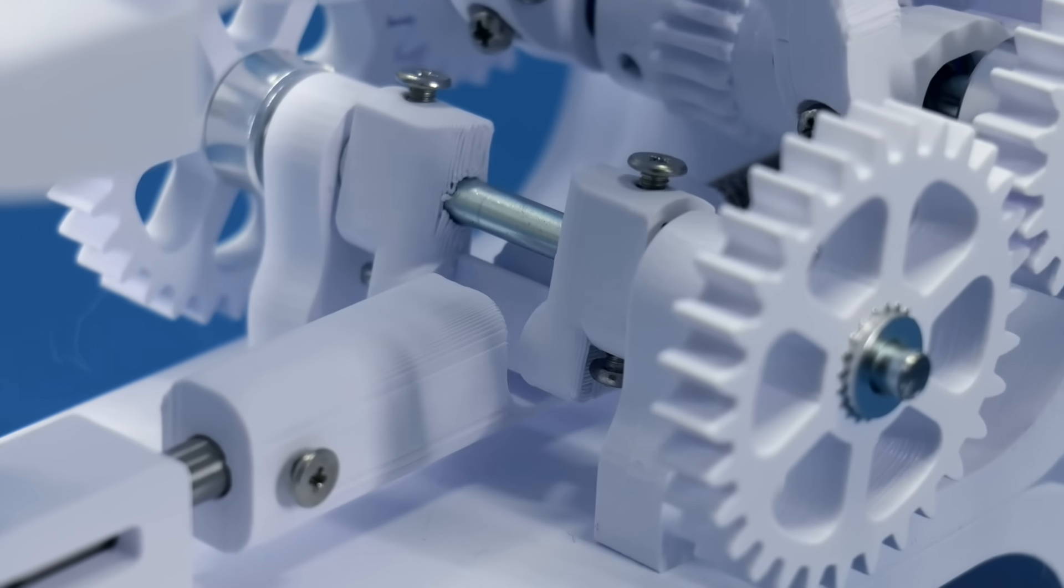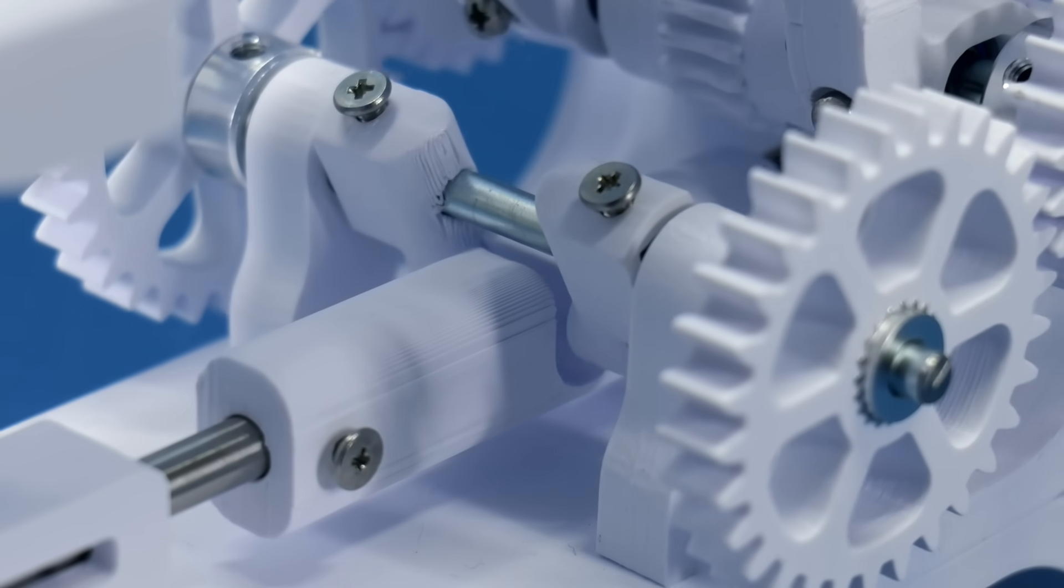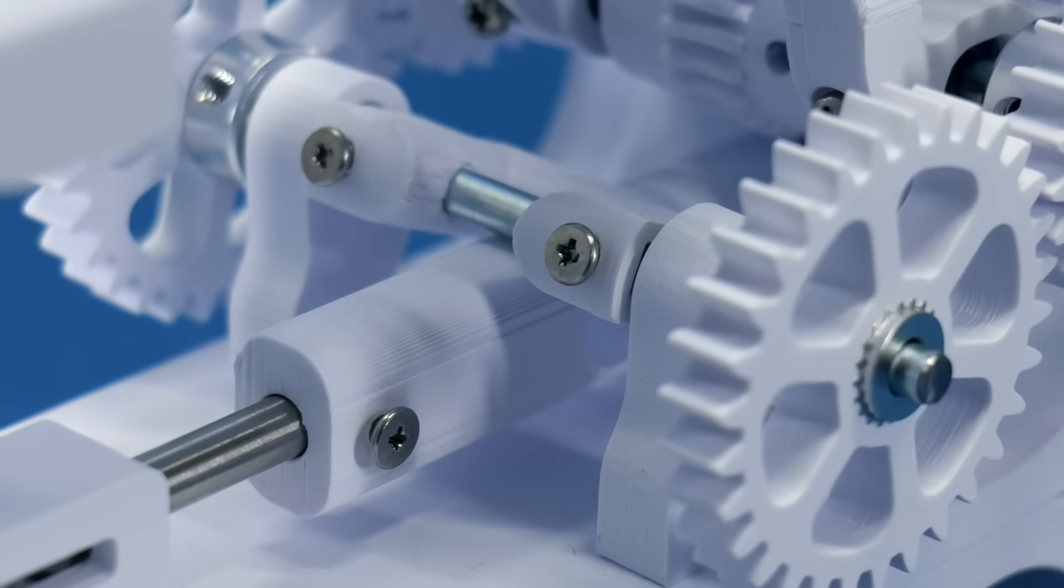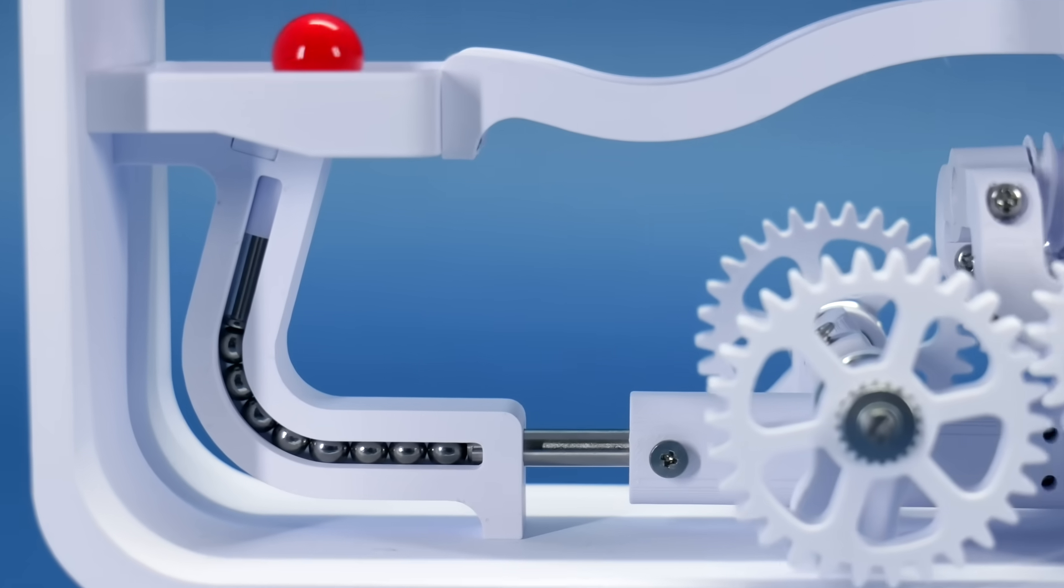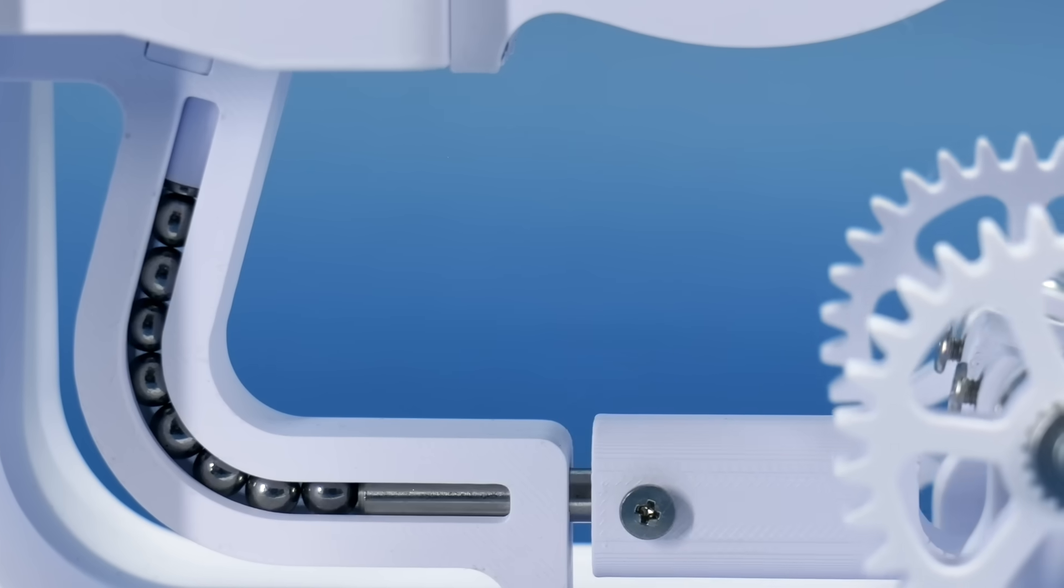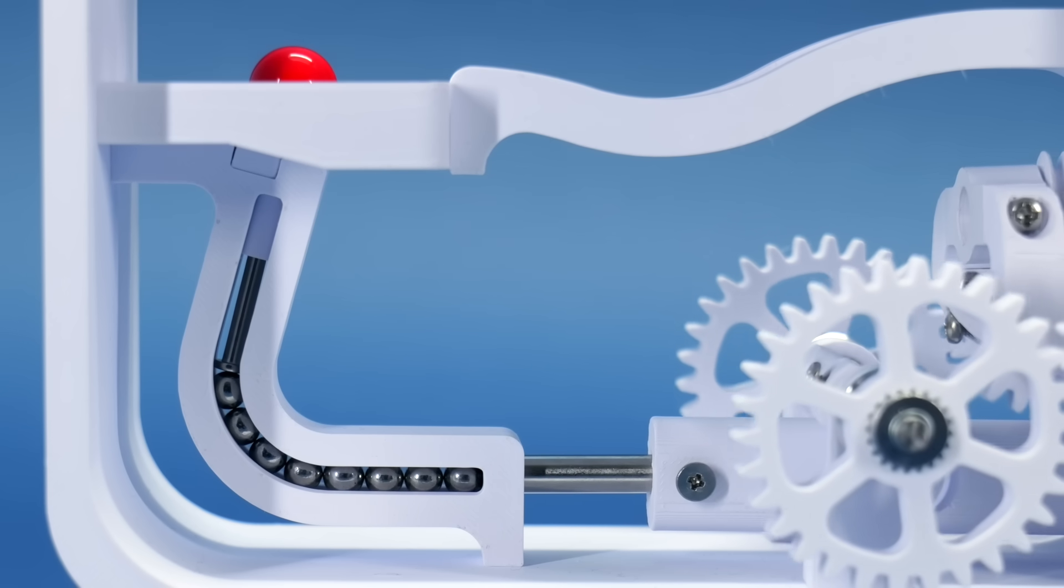As it rotates, it grabs onto this plunger and pulls it back. When it reaches this point in the rotation, it releases the plunger all at once. This force transfer mechanism is actually more interesting than it looks at first. It uses these ball bearings to transfer the force around this curved metal pin, which strikes the ball.